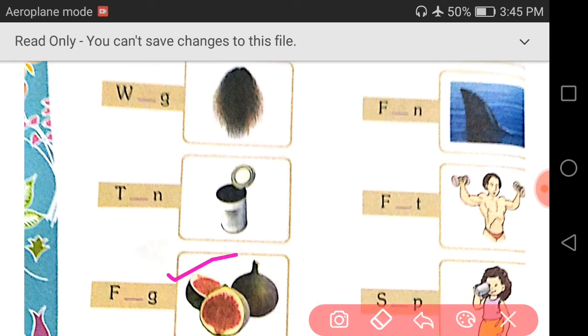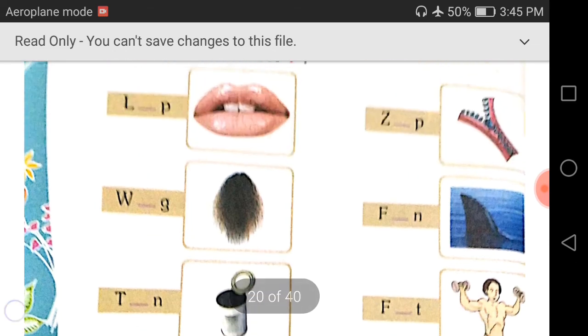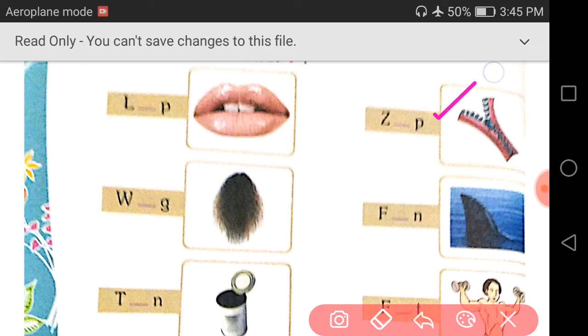Fig. F-I-G, fig. Write down I. F-I-G, fig. Next, zip. Z-I-P, zip. Write down I. Z-I-P, zip.